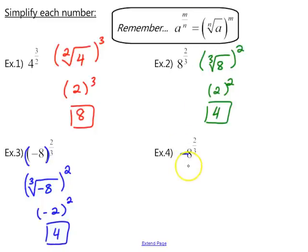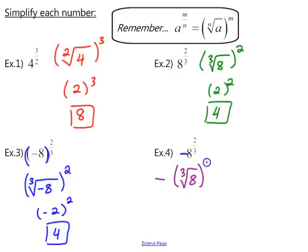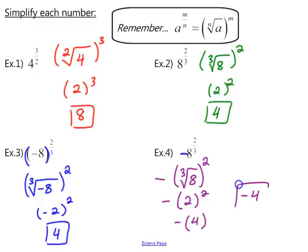In example 4, when converting to radical notation, only the 8 goes under the radical — the negative stays outside. The denominator is the index and only that term gets raised to the second power; the negative still stays outside. The cube root of 8 is 2, and 2 squared is 4. Bringing in the negative: negative times positive 4 gives negative 4. Pay close attention to where the negative is, inside or outside the parentheses, because you'll get a very different answer.